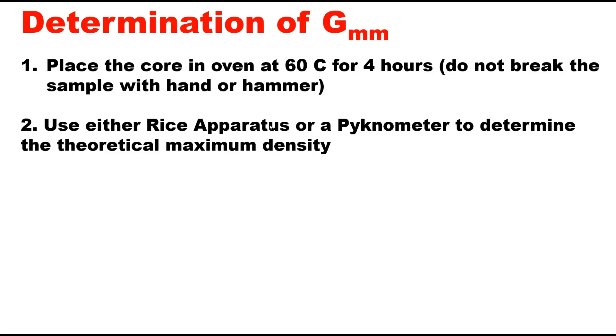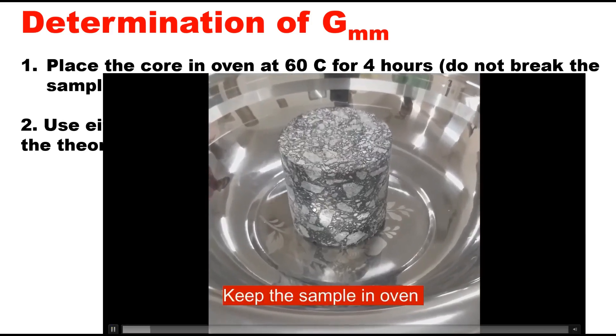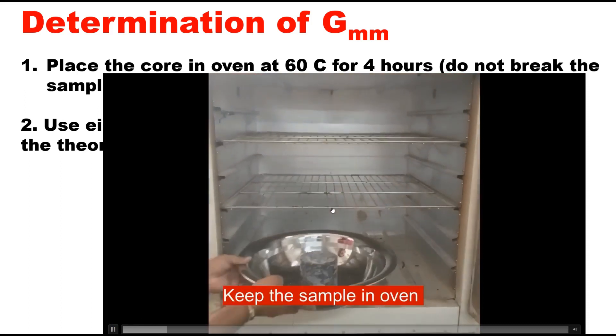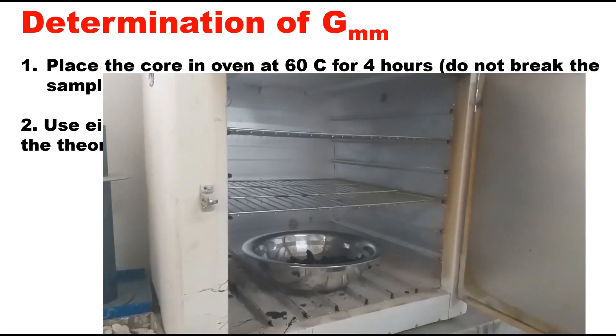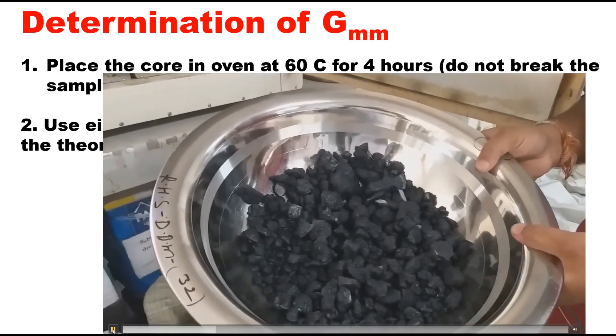To determine GMM, theoretical maximum density, place the core in oven at 60 degrees centigrade for 4 hours and do not break the sample with hand or hammer. You can use either Rice method or pycnometer to determine the theoretical maximum density. Since in case of a core the sample is little less, pycnometer is more suitable than Rice separators. This is the sample of the DBM layer placed in the oven at 60 degrees centigrade for 4 hours. After 4 hours you will find that the sample has not crumbled down, and this is the material which can be used to determine the theoretical maximum density.